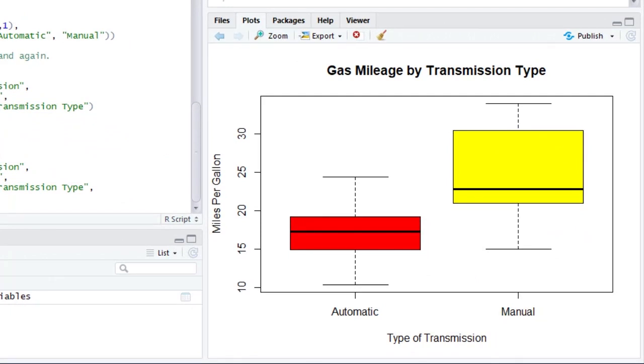The median is about five miles per gallon higher for manual transmissions than for automatic transmissions. In fact, the first quartile of the gas mileage distribution for cars with manual transmissions is higher than the third quartile of gas mileage for cars with automatic transmissions, so the entire interquartile range for manual transmissions is above the interquartile range for automatic transmissions.